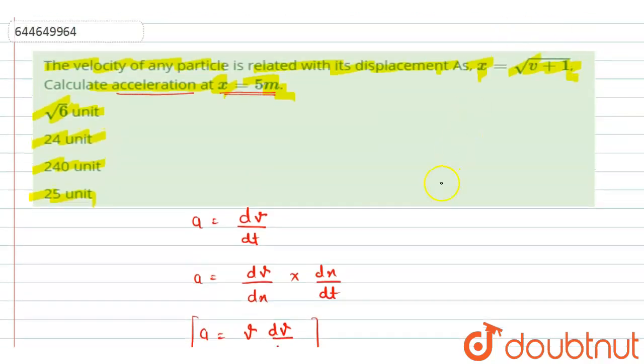Now, we are having the relation between displacement and velocity is given as x equals to under root v plus 1. So from here, if I find the value of velocity, we will get x squared equals to v plus 1, and v will be equal to x squared minus 1.